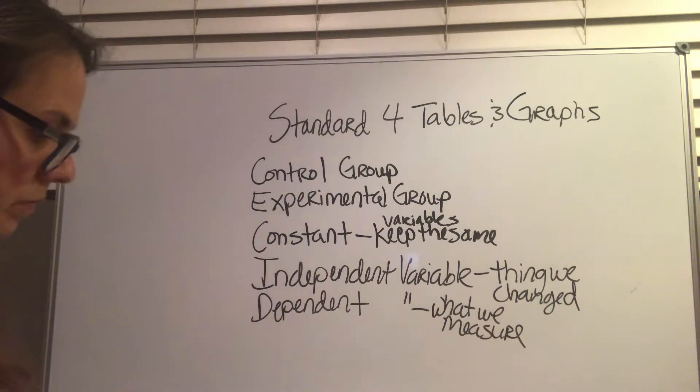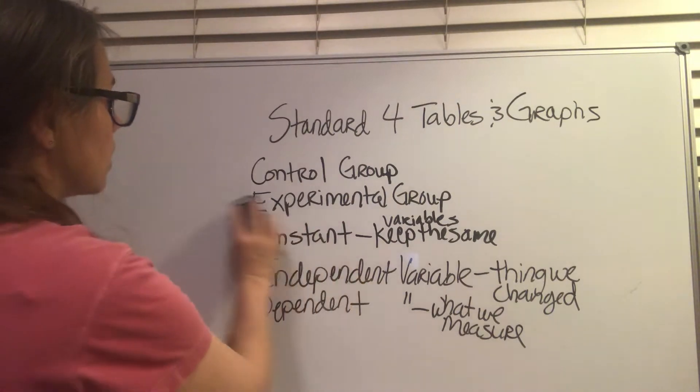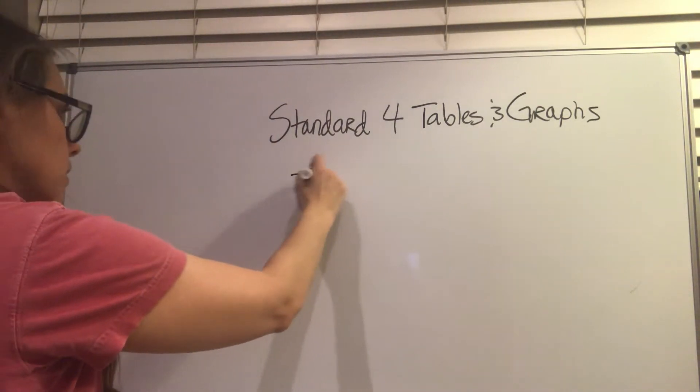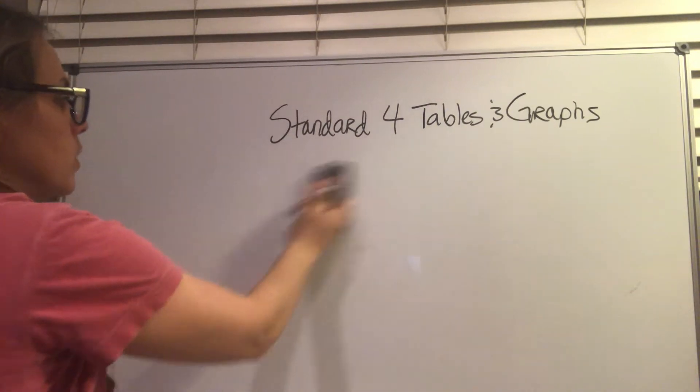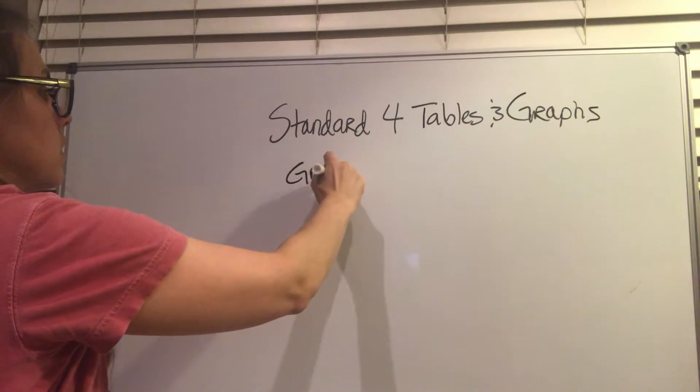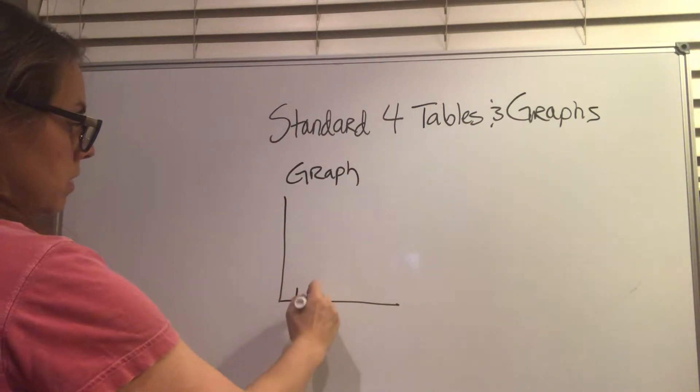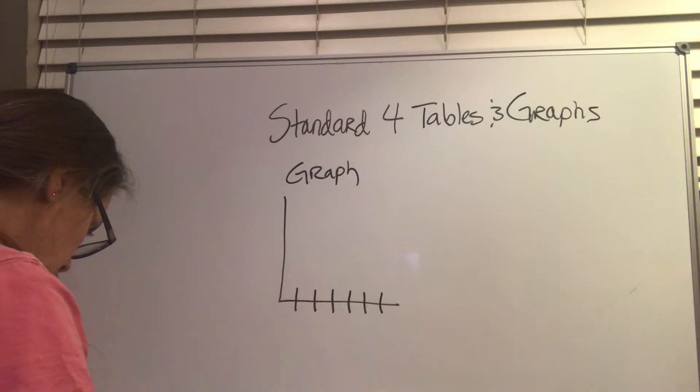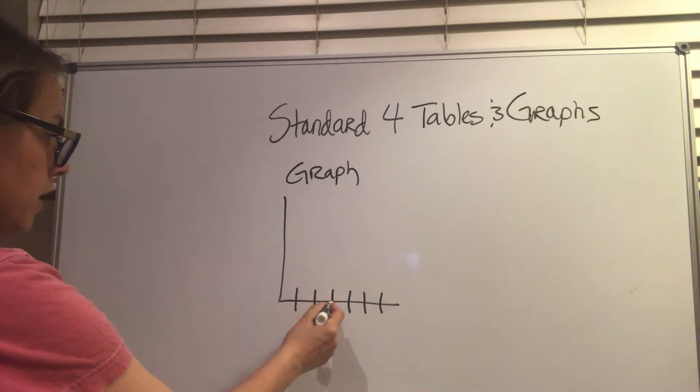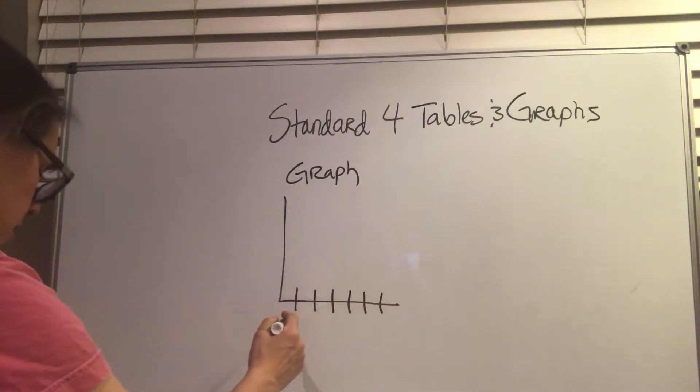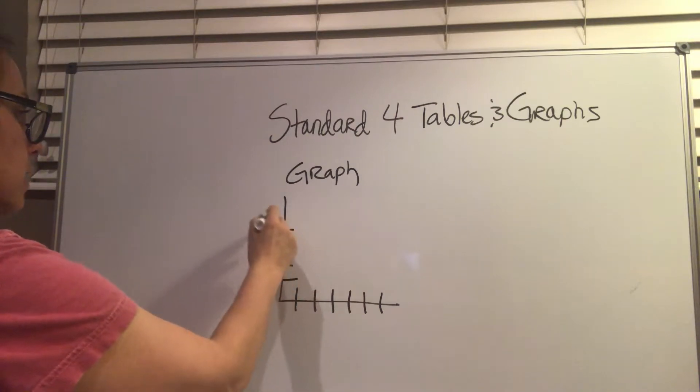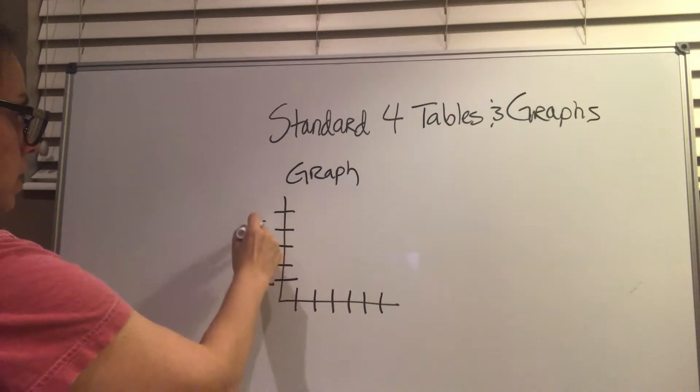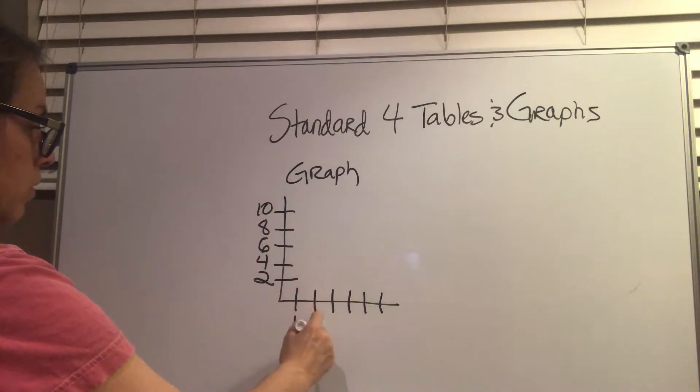When we're creating a graph, we need to make sure we do the hash marks. Increments in space need to be equal, as equal as we can get them. And then the numbers we use also need to be at the same increments. So if we start by twos here, then we have to keep going up by twos. Four, six, eight, ten. If we start by ones here, then we go by ones.